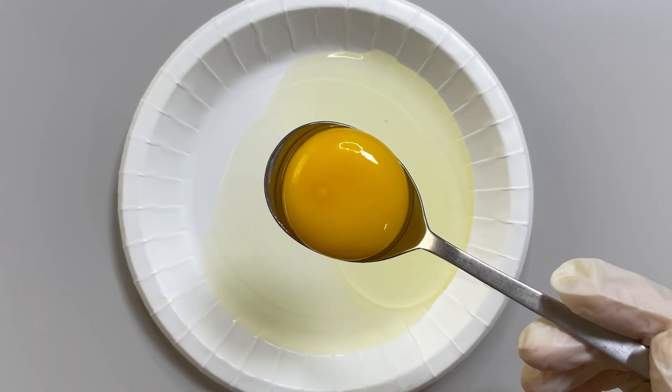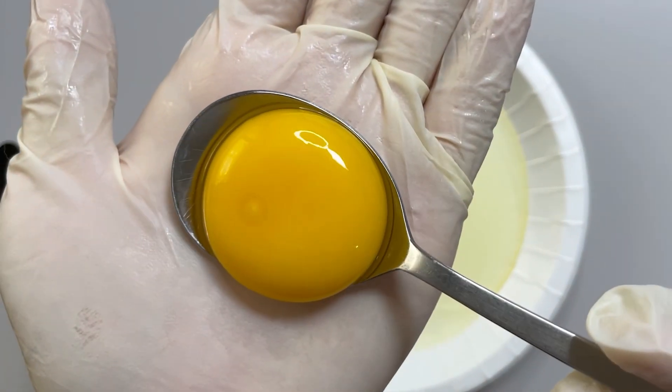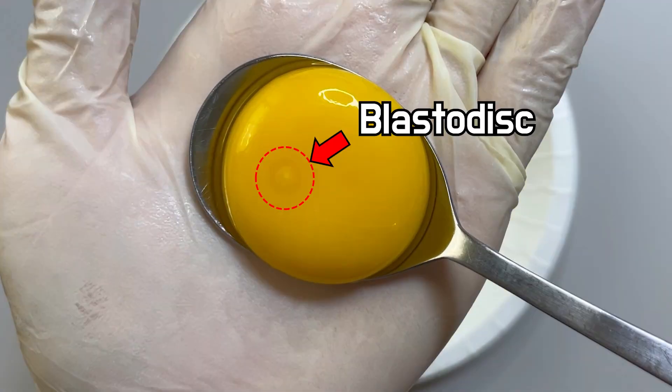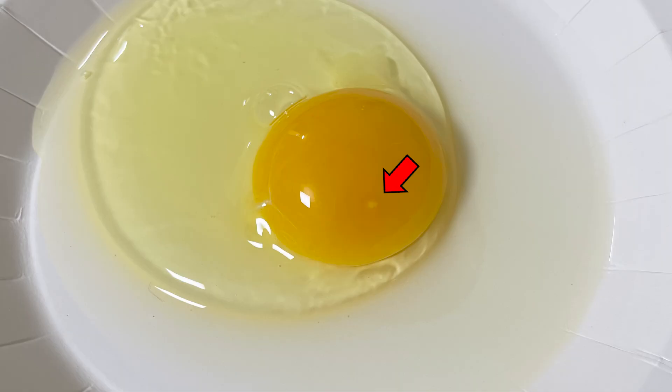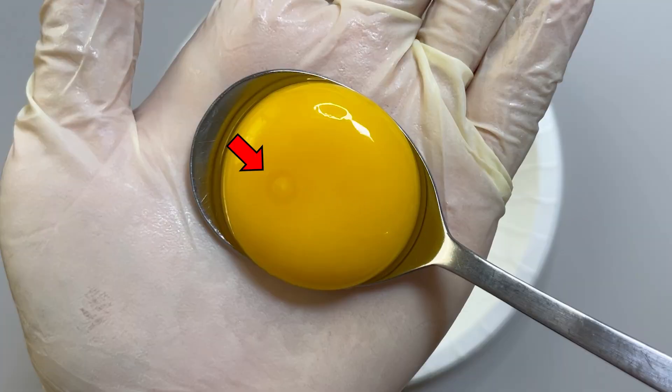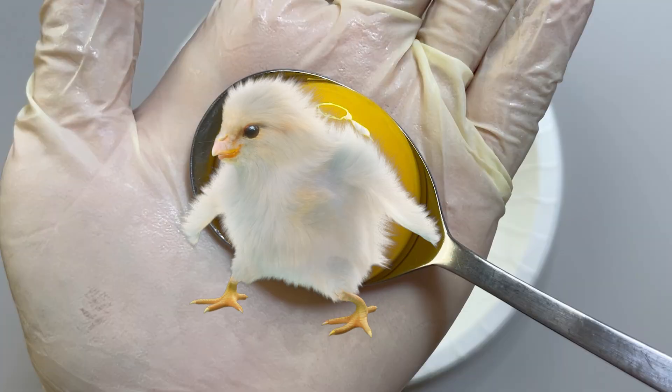While many people think the yolk becomes a chick, but in reality, the part that becomes a chick is the blastodisc, a very small portion. In hens, fertilization and cell division occur only in the blastodisc region. Cell division takes place in this small portion, leading to the formation of a chick.